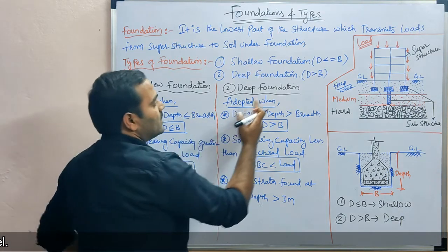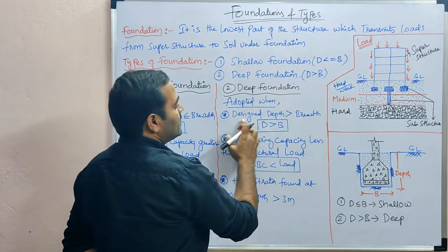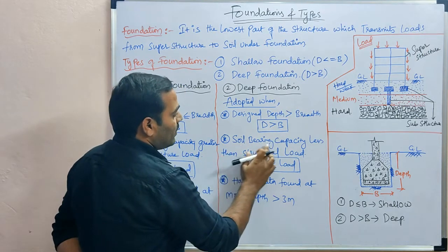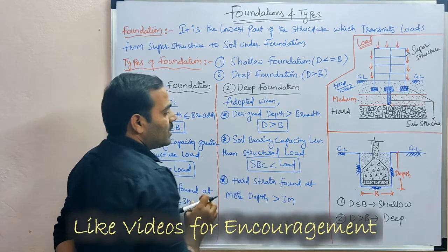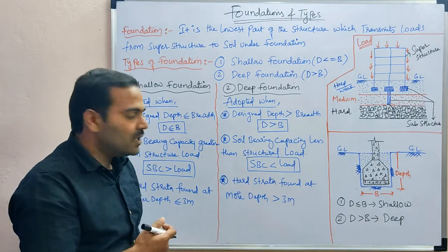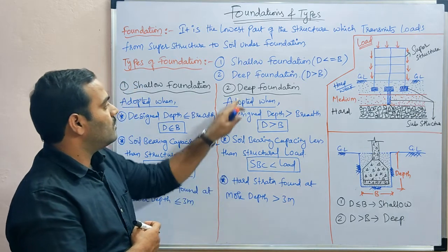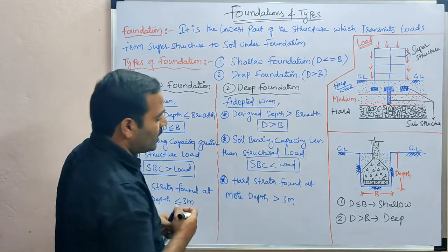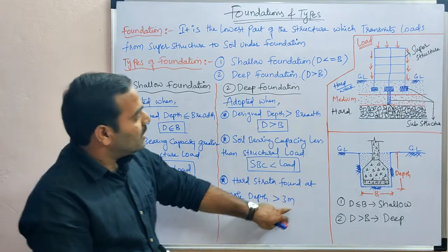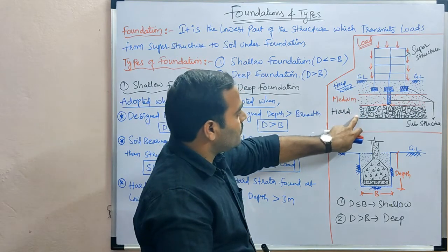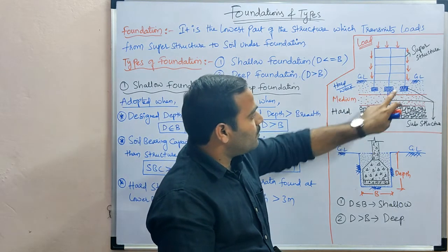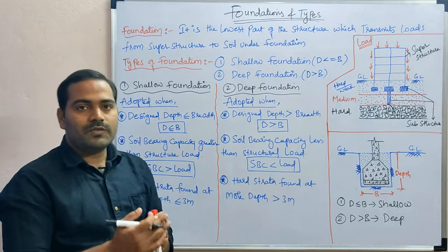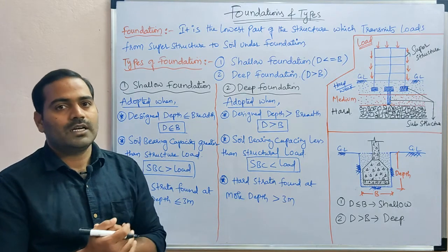Deep foundation is adopted when: first, designed depth is greater than the breadth; second, soil bearing capacity is less than the structural load — SBC is less compared to the structural load; and third, hard strata is found at more depth, that is greater than 3 meters. Based on these conditions we differentiate shallow foundation from deep foundation.